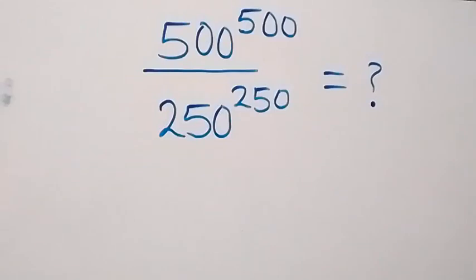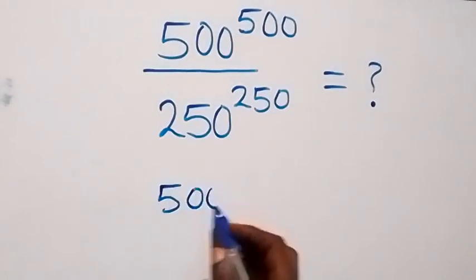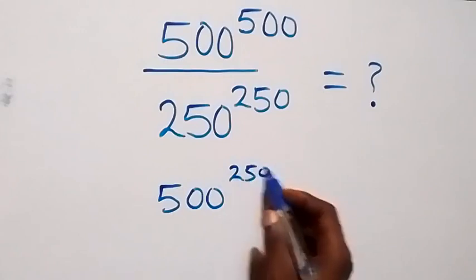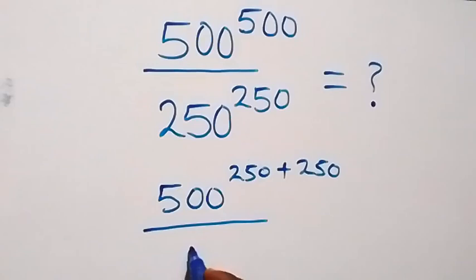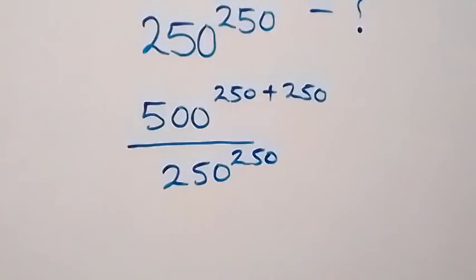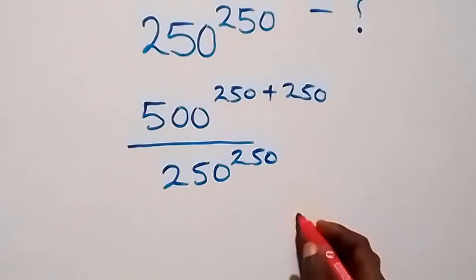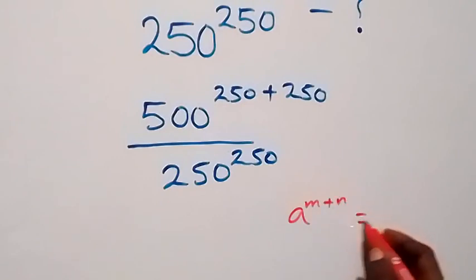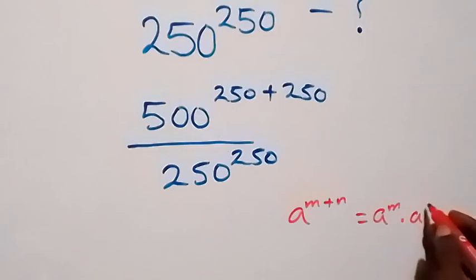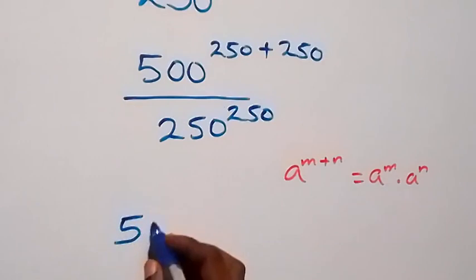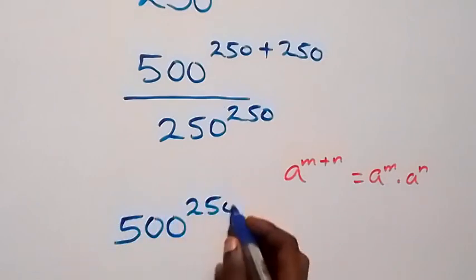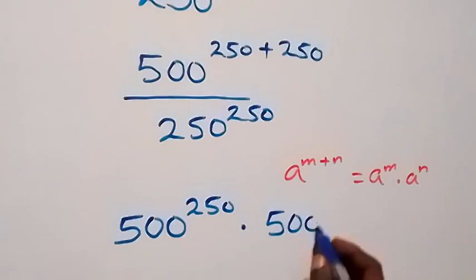Hello, you are welcome. How to solve this nice exponent problem. From what we have here, we can write this as 500 raised to power 250 plus 250, divided by 250 raised to power 250. Then, applying the law of indices — a raised to power n plus n is the same as a raised to power n times a raised to power n — we can write the numerator as 500 raised to power 250, times 500 raised to power 250.